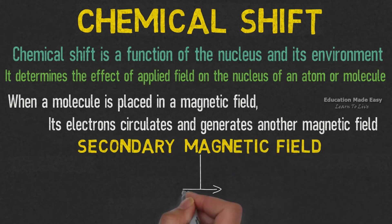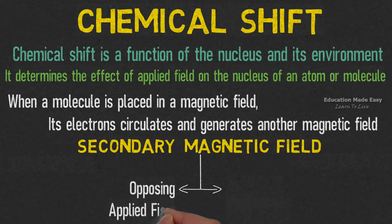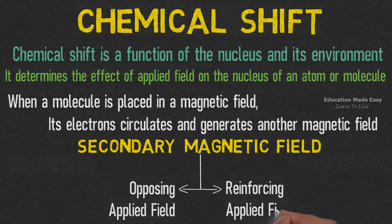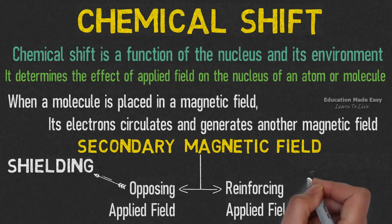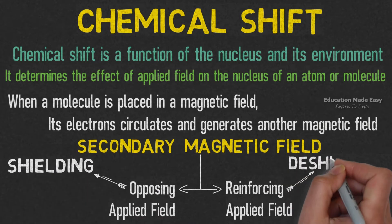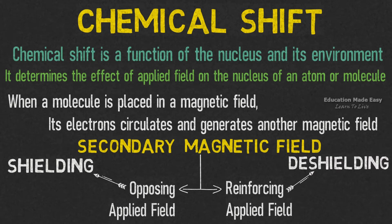The secondary magnetic field can behave in two ways. It can be opposing the applied field or reinforcing the applied field. If it is opposing the applied field, it causes an effect called shielding. If it is reinforcing the applied field, it causes an effect called deshielding.